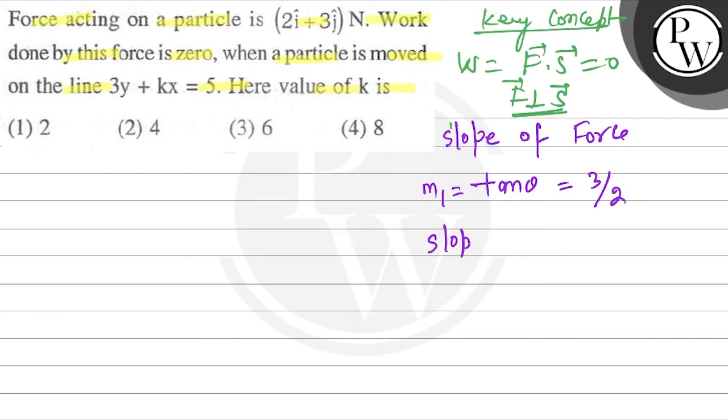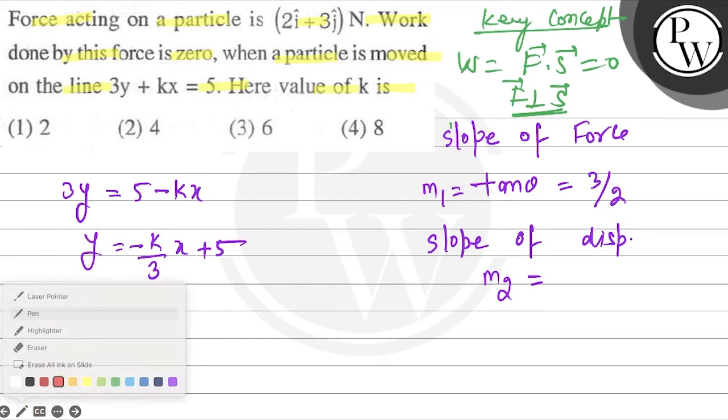Slope of displacement, that is your m2, and this is equal to slope of line. The line given is 3y = 5 - kx, so y = -k/3 times x + 5/3. So your slope is -k/3.